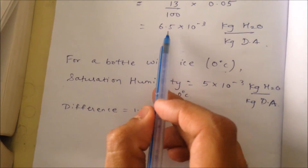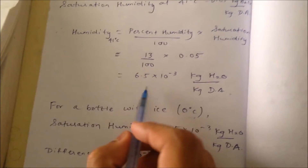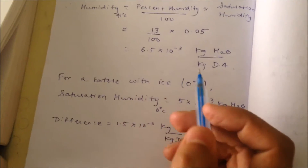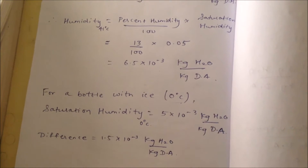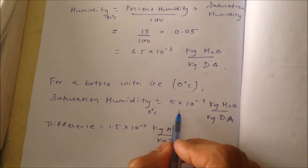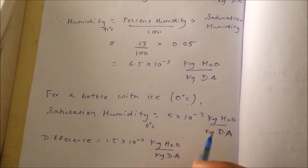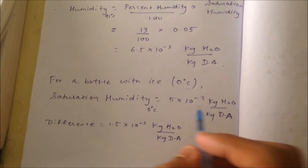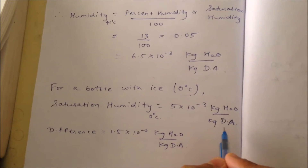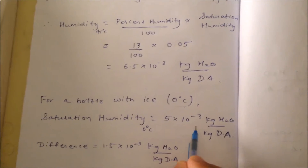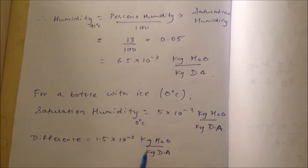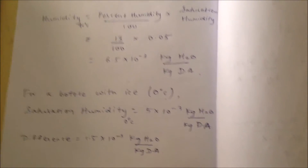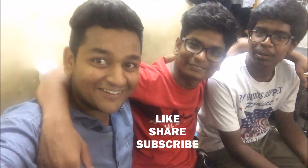As you can see, the humidity in this case is 6.5 × 10⁻³, whereas for the air surrounding the bottle the maximum amount of water vapor that the dry air can hold is 5 × 10⁻³. So the excess water vapor will get condensed on the surface of the bottle. Please do like, share, and subscribe to our channel.